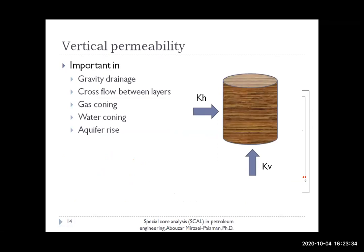Although in petroleum engineering most attention is on horizontal permeability, vertical permeability is really important in several applications. For example, in gravity drainage in naturally fractured carbonate reservoirs — which are very common in Iraq — gravity drainage is very important. Also in situations with cross flow between layers, during gas coning, water coning, and aquifer encroachment, vertical permeability is really important. We need such information in our RCAL studies.